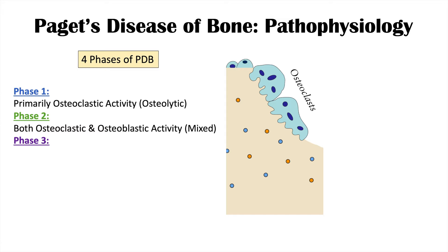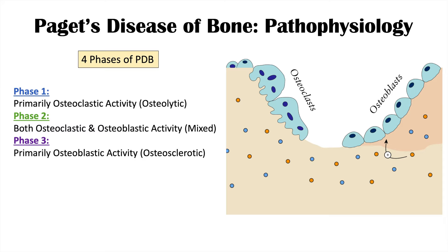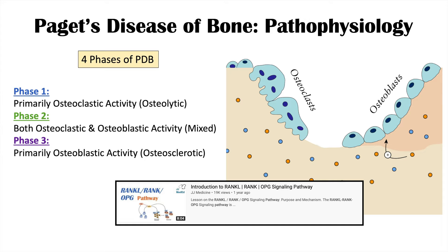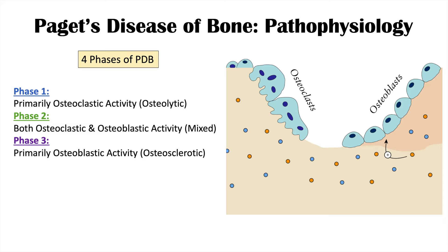Phase three is primarily osteoblastic activity — the osteosclerotic phase — where osteoclasts have done their job and osteoblasts come in to fill in the bone. There are many cellular signaling pathways involved with RANK-L, RANK, and osteoprotegerin (OPG). Eventually, some cases lead to phase four, where there's so much building and remodeling that there is malignant degeneration of this process, leading to malignancy.